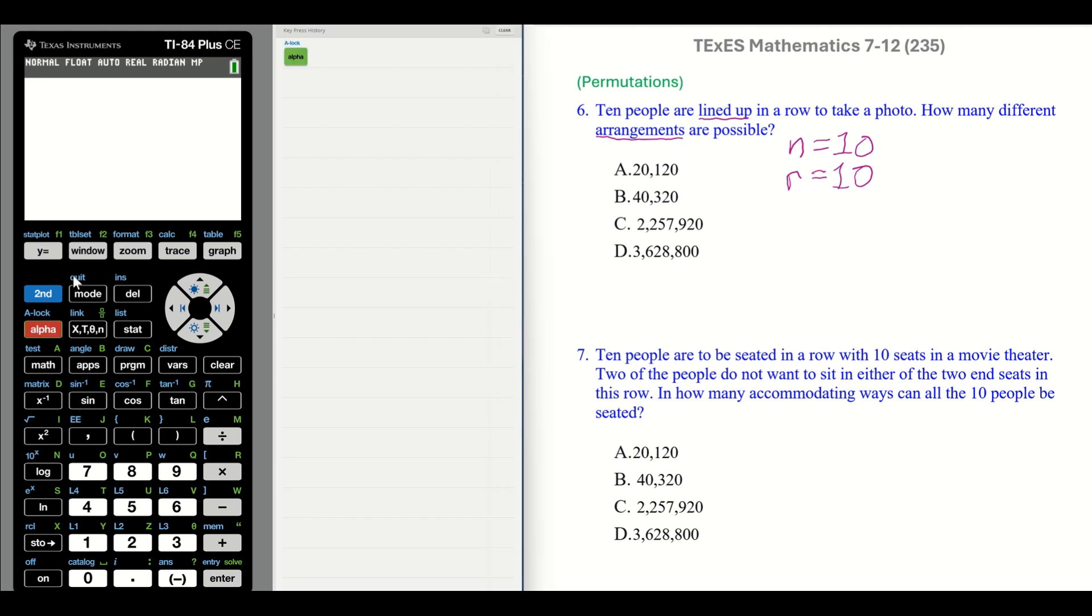All the possibilities. So we go to an alpha window, seven. 10. Arrow over. 10. Enter. Again, a very significant number.